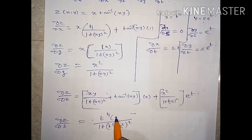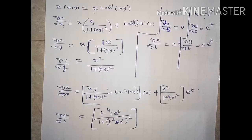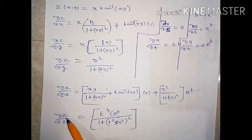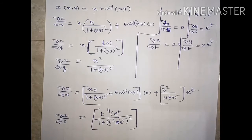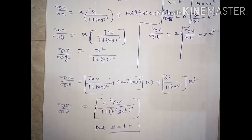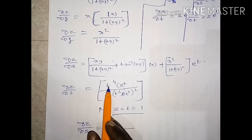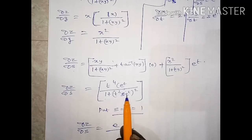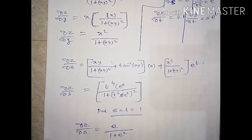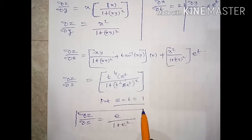Substituting all values: dou z by dou s equals, with xy value as t squared times s times e power t in (1 plus xy whole square), and substituting s equals 1, t equals 1. The final answer is: dou z by dou s equals E by (1 plus E square).